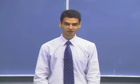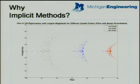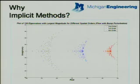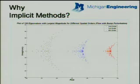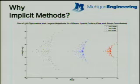The plot shown here is the plot of the 100 largest eigenvalues of the system for a flow with a bump perturbation case. As you can see, with increasing spatial order — which means as we refine the computational grid — what happens is that the eigenvalues tend to move away from the origin of the complex plane.